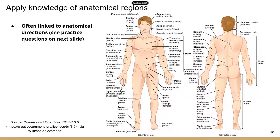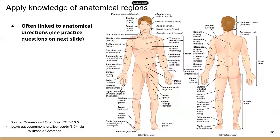Hey everyone, today we're going to talk about the anatomic regions, which has been recently added to TEAS 7. I included this in the previous lesson, but I only talked about two or three regions as an example. Two things prompted me to go over all the body regions today: a student asked me to, since there are a lot of terms that are hard to remember, and a student who recently took TEAS 7 got a question about one of the body regions on the test. So let's go over all the body regions together.